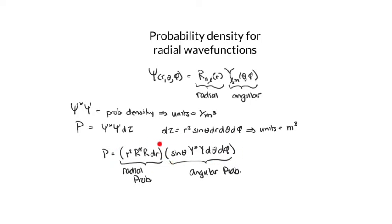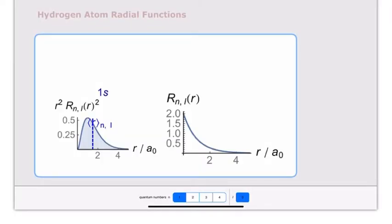Let's take a look at the radial probability functions, and in another video we'll look at the angular probability. The two graphs pictured here are the radial wave function for different n and l, which I can change using the buttons. When n equals 1 and l equals 0, we have a 1s probability distribution. The 1s radial wave function has no nodes — there is no place where the wave function crosses zero — and so the probability distribution also has no nodes.